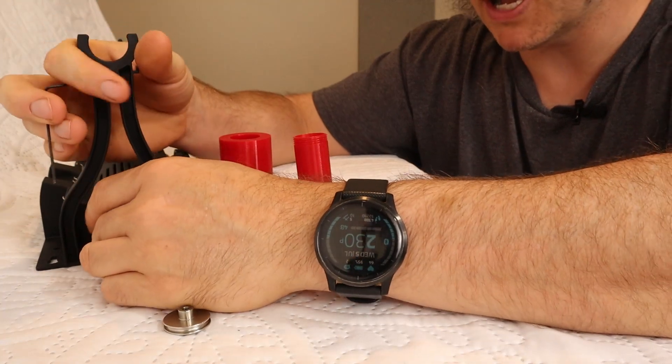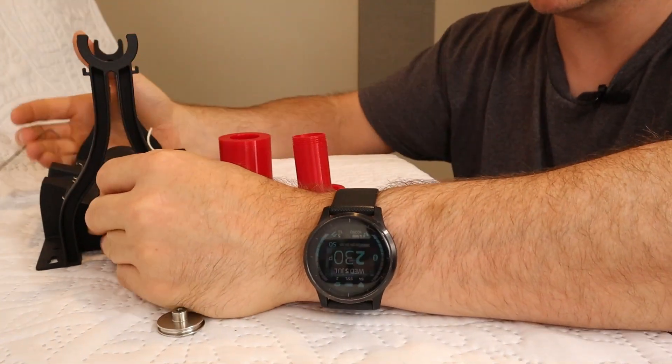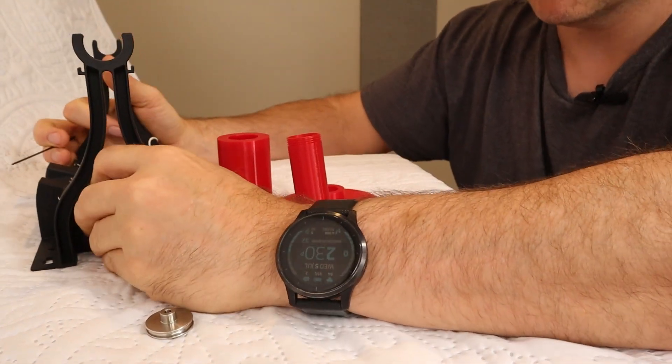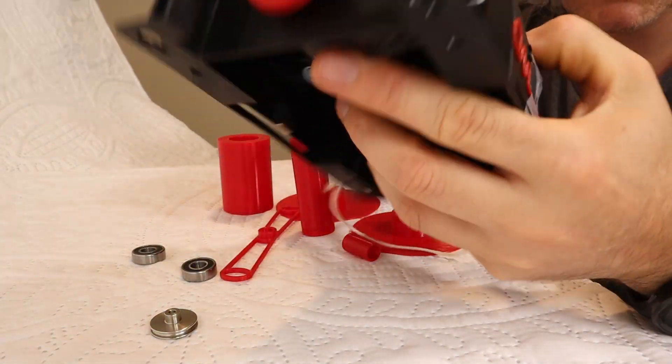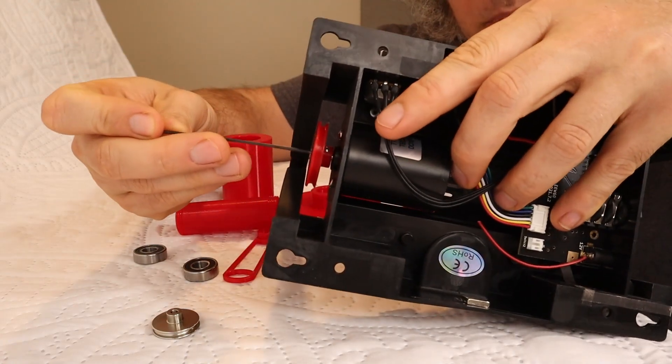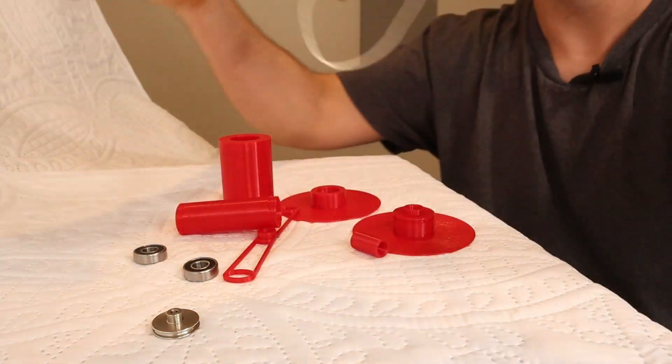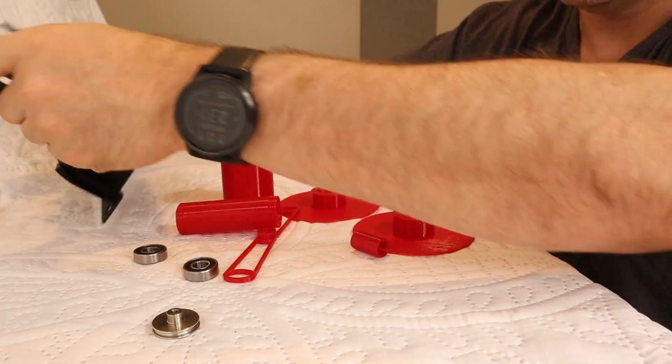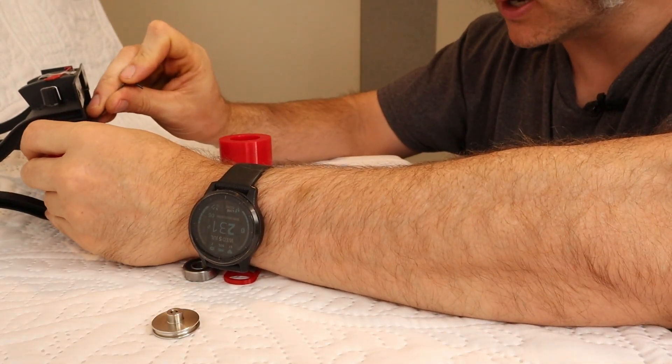And then you put the new one on like this, and it's going to be a nice snug fit. Remember, you want to leave about a two millimeter gap between the edge of the pulley and the edge of the motor. And then you'll tighten it with the hex wrench.